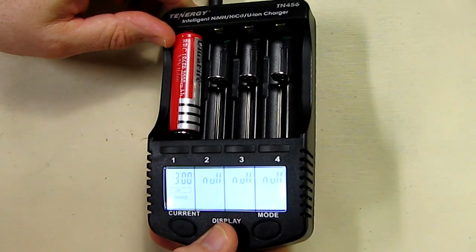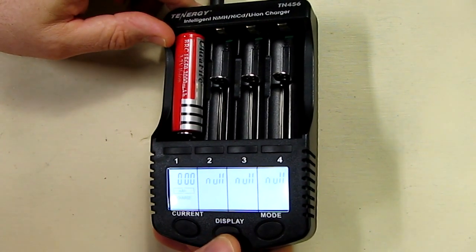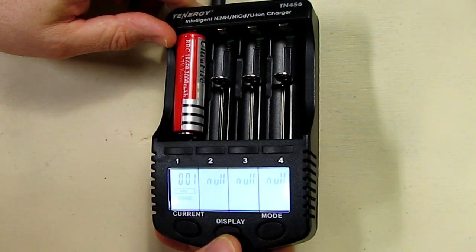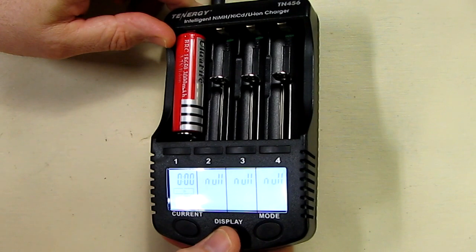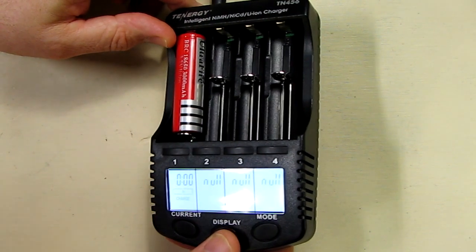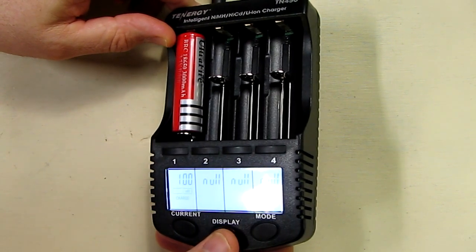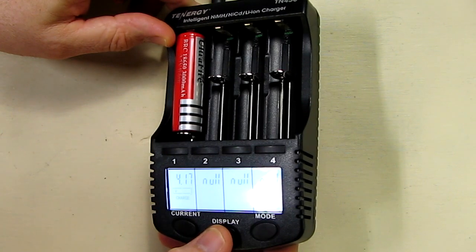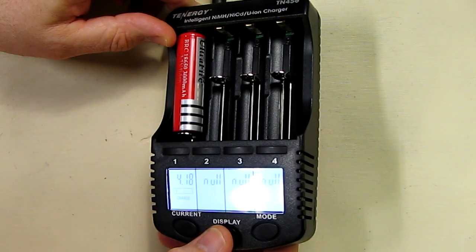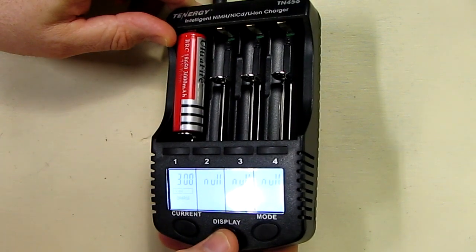When you hit the display, you can get the various functions. That's the milliamp hours that's going into it right there at 1, and that's the time in hours. Of course it's zeros, we just started. And that's the internal resistance which is 100 milliohms and that's the current voltage which is 4.18.